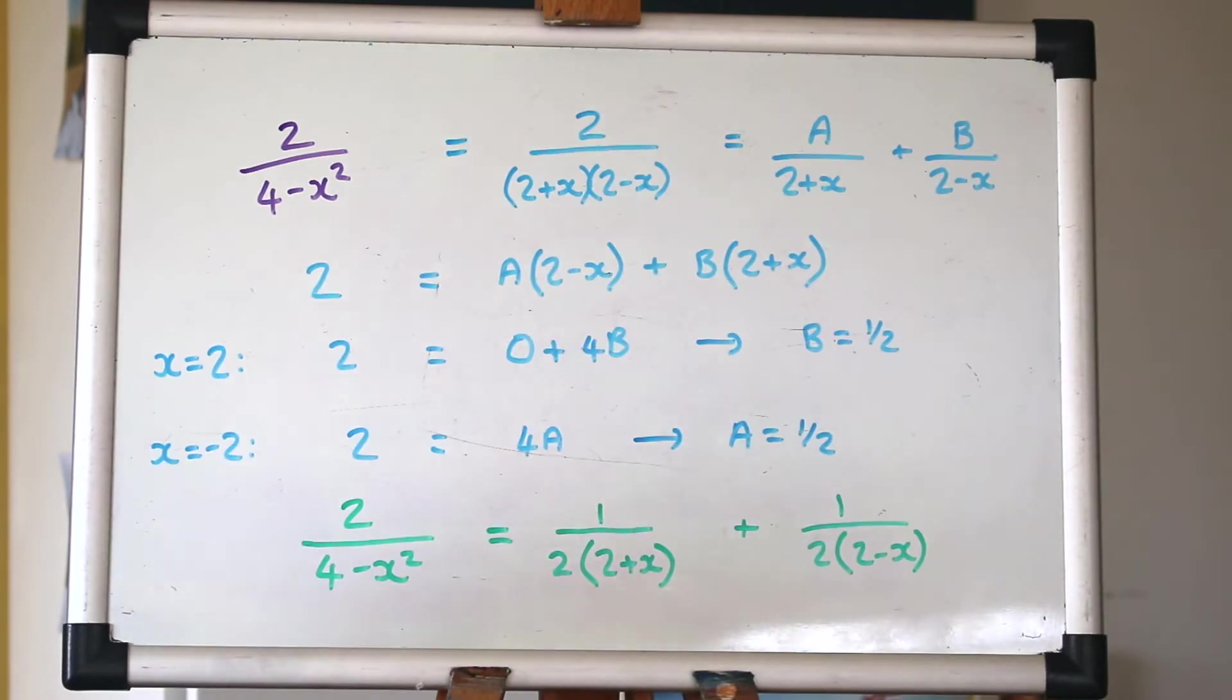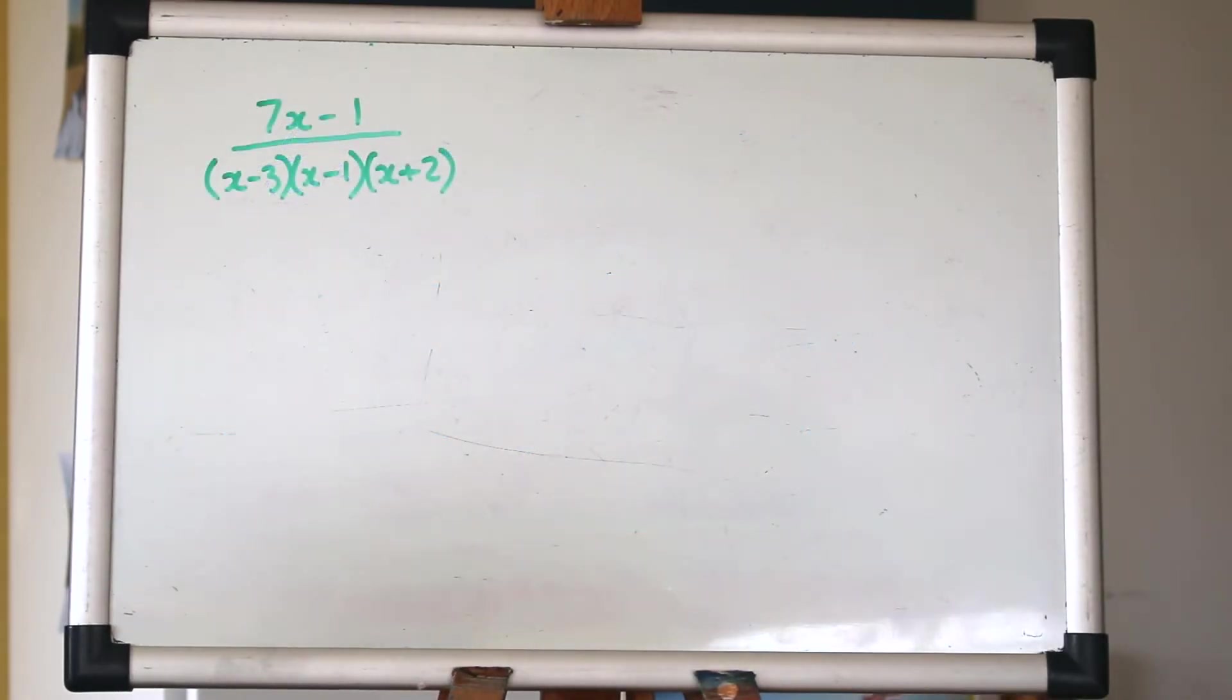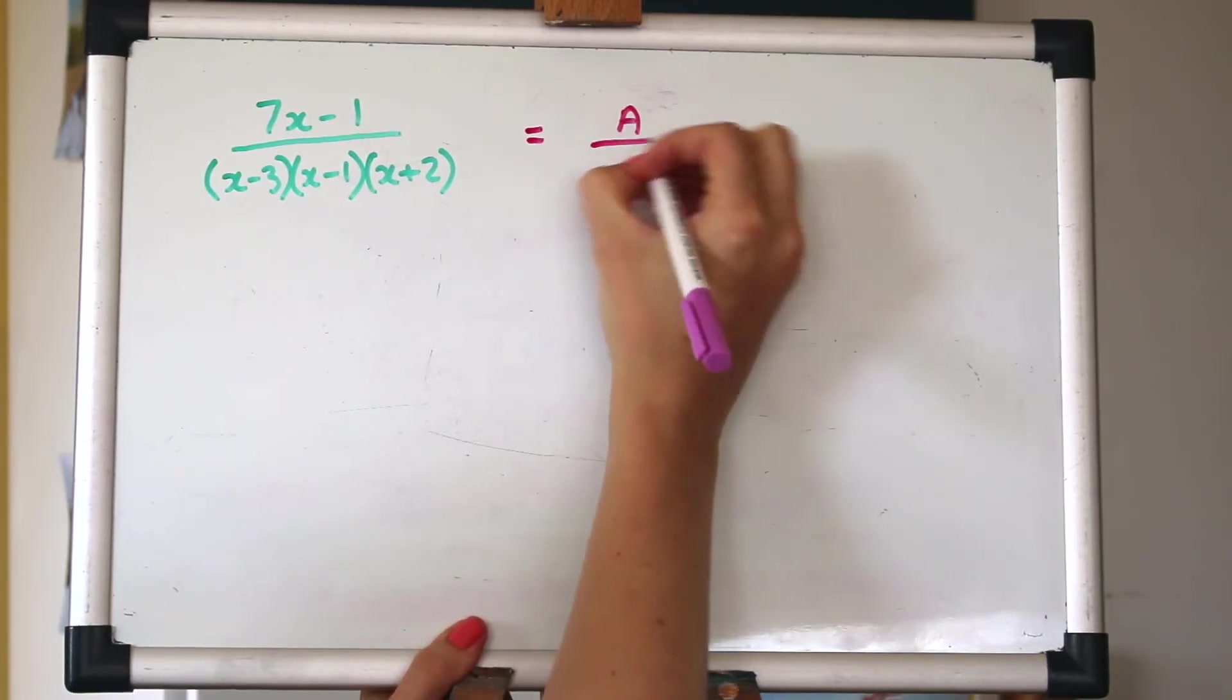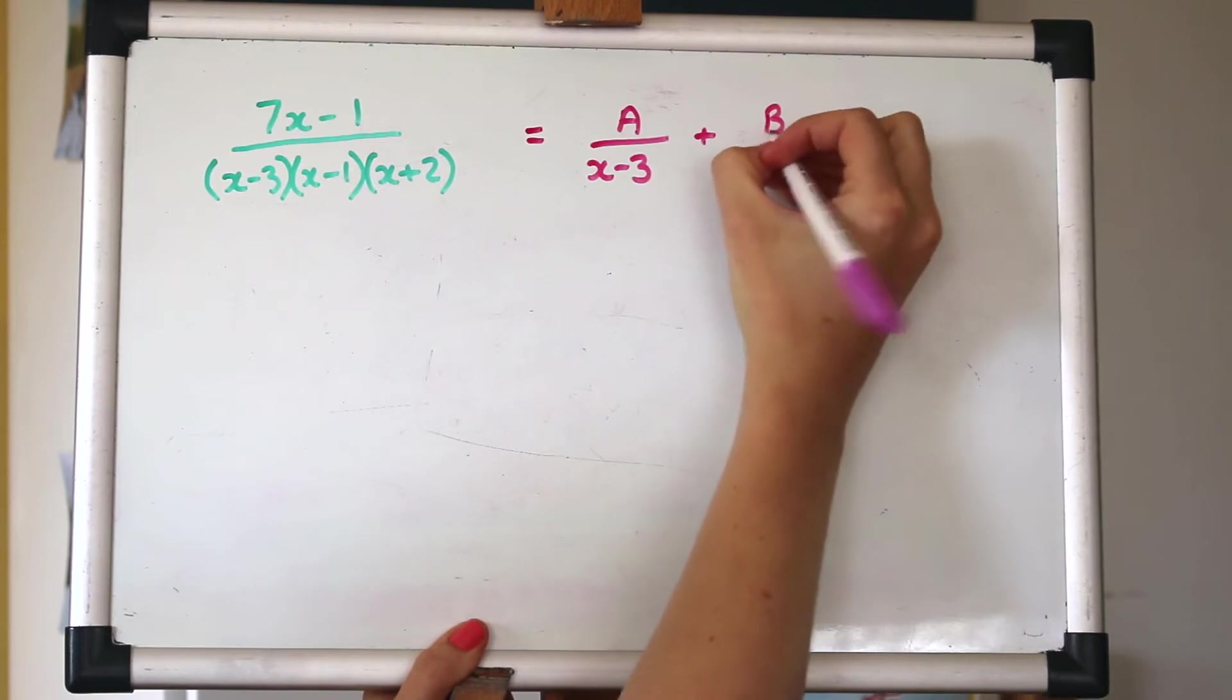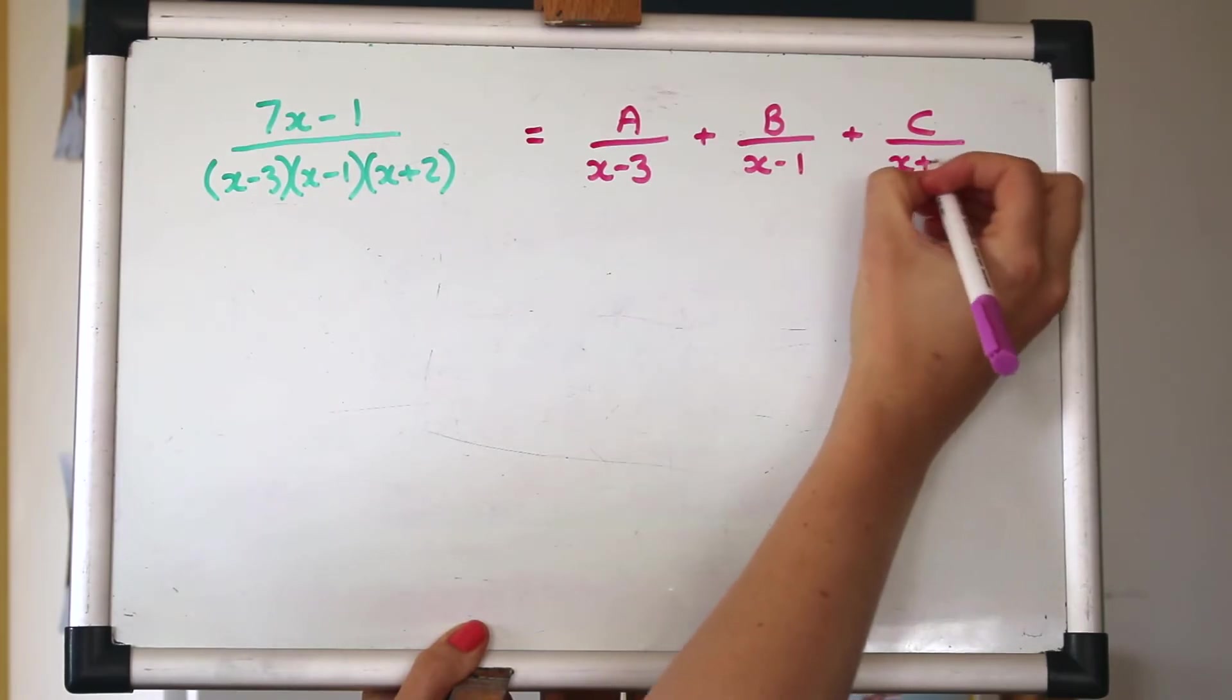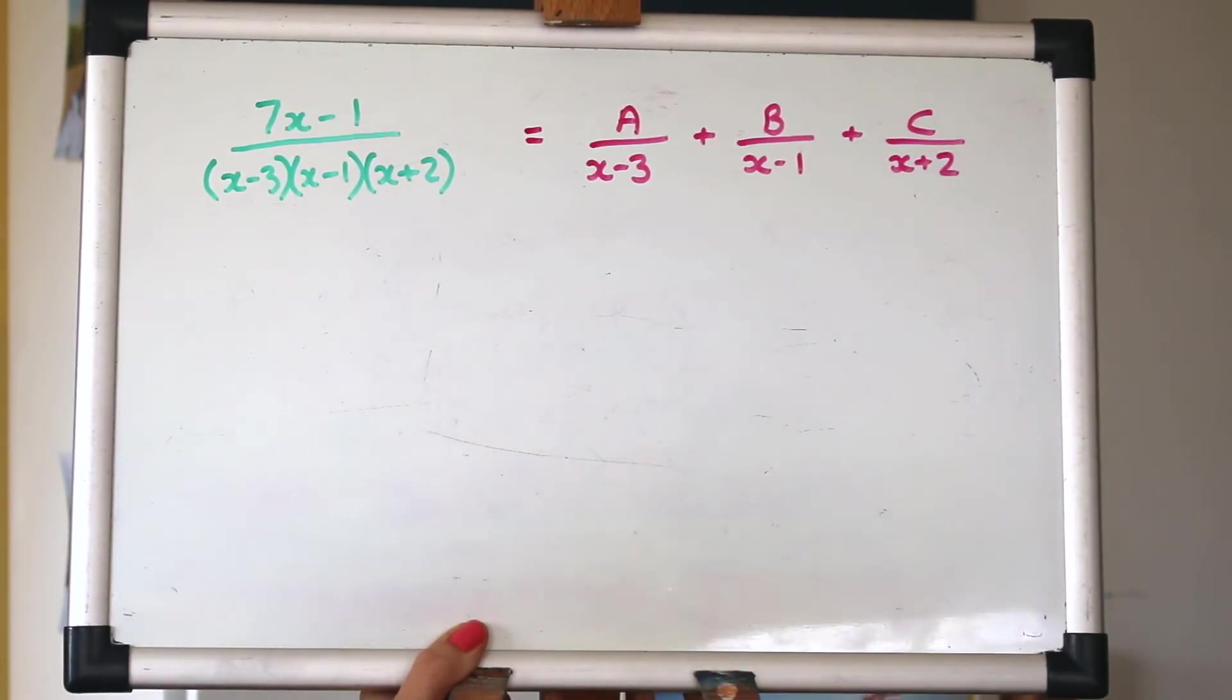Okay, this time we're going to look at one with three factors on the bottom. So it's the same sort of process, just a little bit more to it. So we're going to split that one up. And I was kind, I didn't make you factorize that bottom. I'm just giving it to you straight up. But we're going to just use a, b and c, we don't know what they are yet, and do the same process. So do have a go.